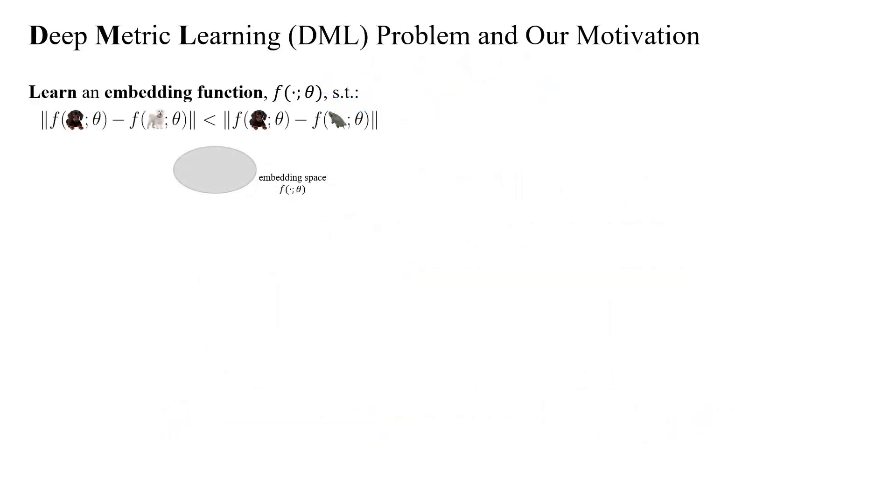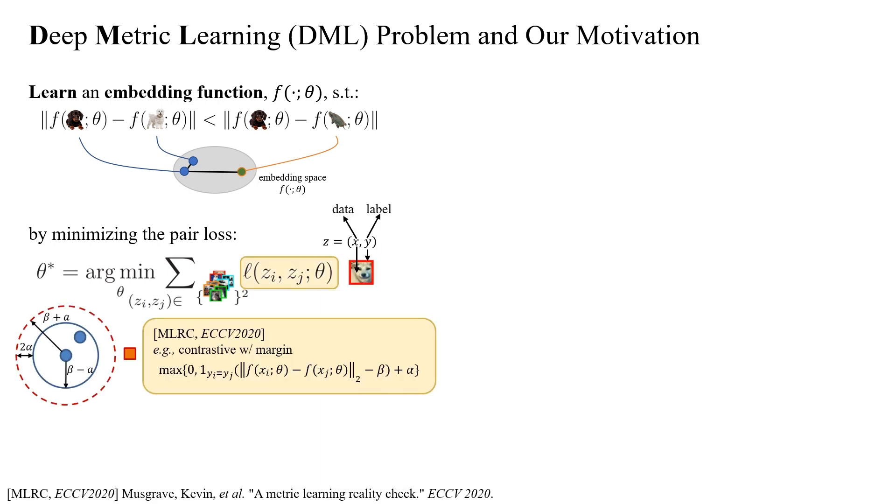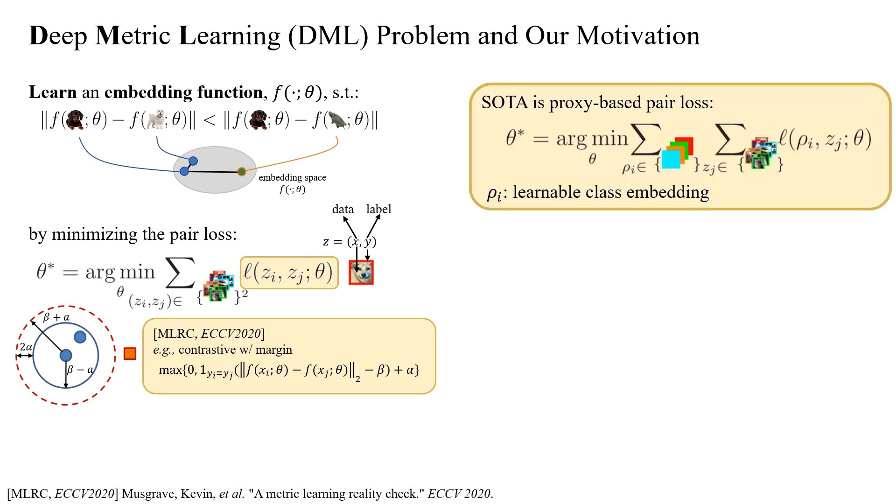In Deep Metric Learning, we aim to train an embedding function that brings similar samples closer together in the embedding space, while pushing dissimilar ones farther apart. We achieve this by sampling batches of images from labeled datasets, calculating pair losses that penalize discrepancies in intra- and inter-class distances. The state-of-the-art employs proxy-based methods where trainable class embedding vectors replace samples in pairs, enhancing the minibatch with information from all classes.